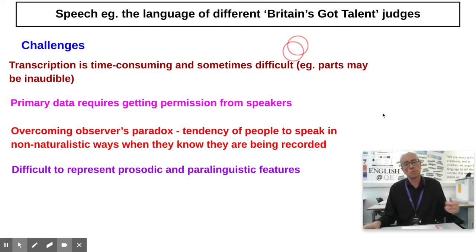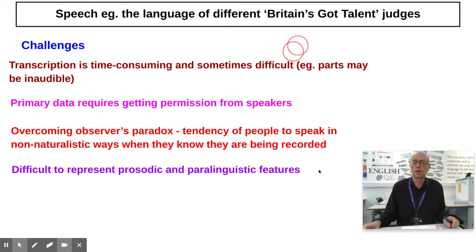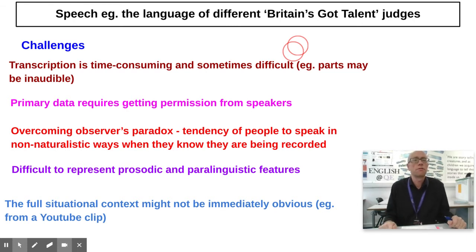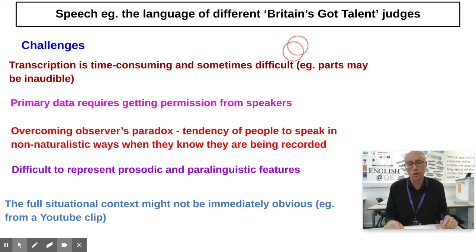The other challenge — as discussed with the Strictly Dancing judges example — is that it's actually difficult to represent prosodic and paralinguistic features. You'll have to somehow demonstrate that they are significant. Also, the full situational context may not be immediately obvious from a YouTube clip, so that is a possible further challenge with speech data.